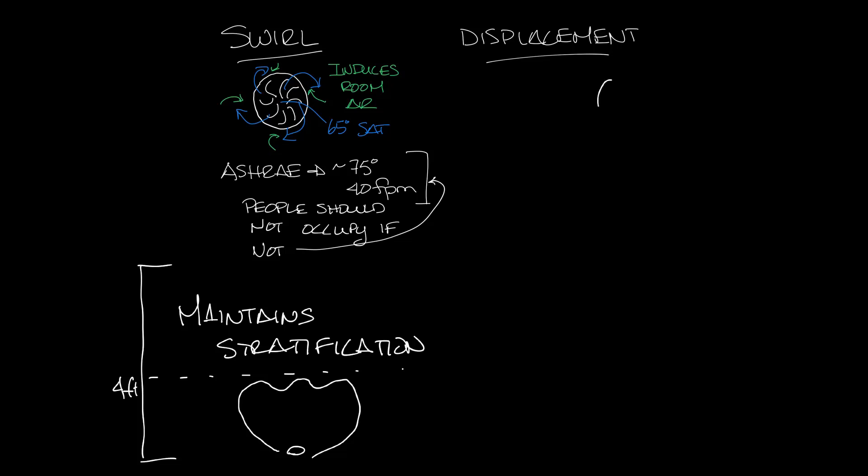Now the other face option is the displacement ventilation face and it looks like this with straight slots. The idea behind displacement ventilation is that you have low velocity air moving slowly across the floor until it finds a heat source.